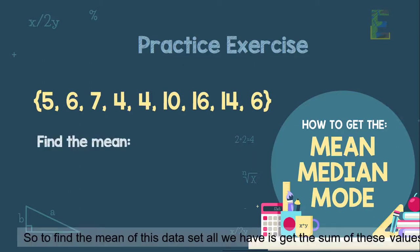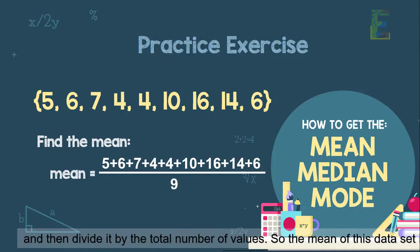So to find the mean of this data set, all we have to do is get the sum of these values and then divide it by the total number of values. So the mean of this data set is 8.